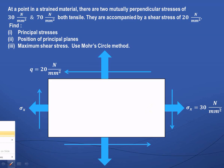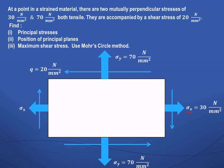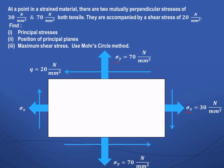As shown here, sigma x — the stress in the x-direction — is 30 MPa or 30 N/mm², tensile. Similarly, sigma y — the stress in the y-direction — is 70 N/mm², also tensile, and it is accompanied by the shear stress as shown.